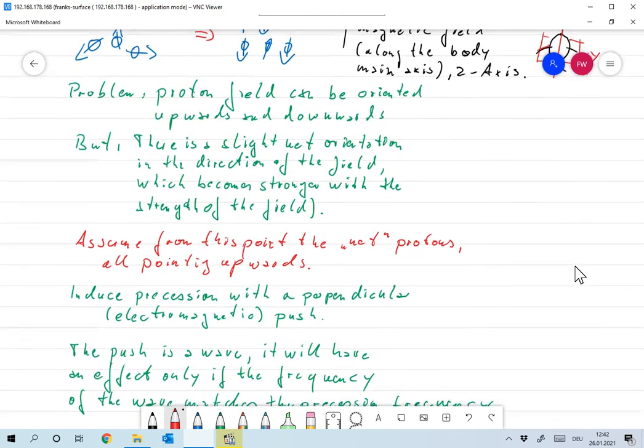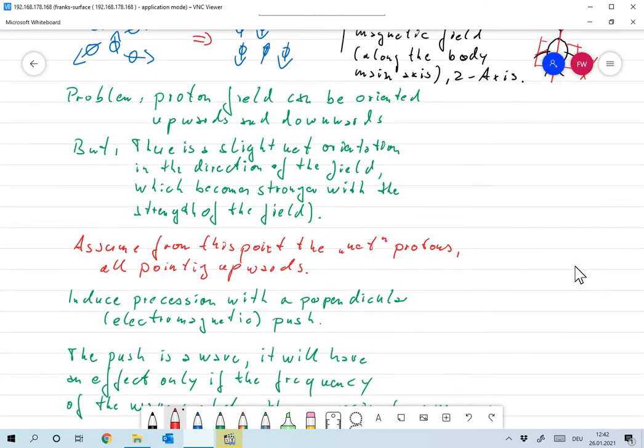Okay, so we have a little bit more pointing up than down. Since everything cancels, since all the others cancel, we will now just assume that we have only protons going up and we can forget about the rest. So we have some protons going up.